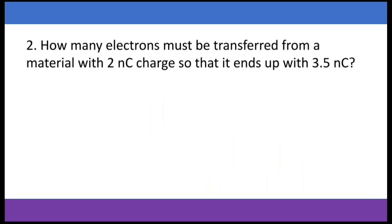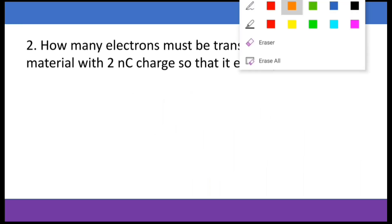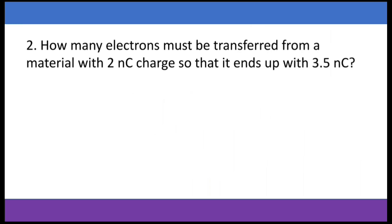How many electrons must be transferred from a material with 2 nanocoulombs so that it ends up with 3.5 nanocoulombs of charge? Here we have added another prefix: nano. Just like in most of our units, we always have these little prefixes that stand before the units, like kilometer or centimeter. In this case, nano simply means times 10 to the minus 9.